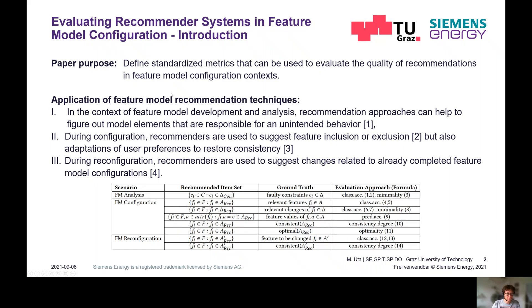The paper's purpose was to define standardized metrics that can be used to evaluate the quality of recommendations in feature model configuration contexts. We found that in recent years, various different approaches for evaluating recommendations have been used across papers, and the comparability of those approaches is not fully given since the standardization of these evaluation metrics is lacking. So, we are introducing in this paper some standardization of these recommendation metrics.